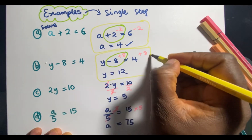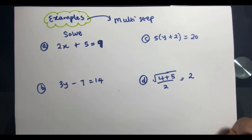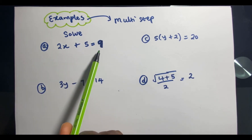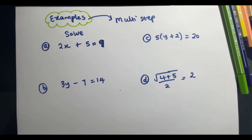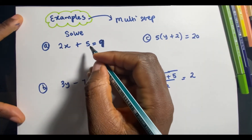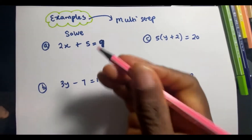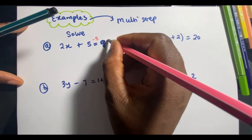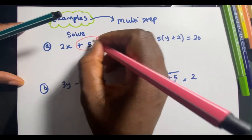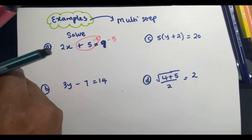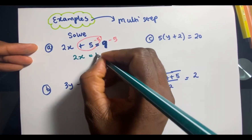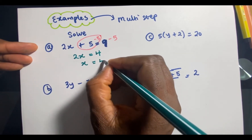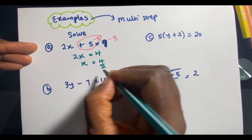Now let's look at some multi-step problems. Find x when 2x + 5 = 9. We want to rearrange to make x the subject. We start by subtracting 5 from both sides — this gives 2x = 4. Then we divide both sides by 2, and x is equal to 4 divided by 2, which is 2.